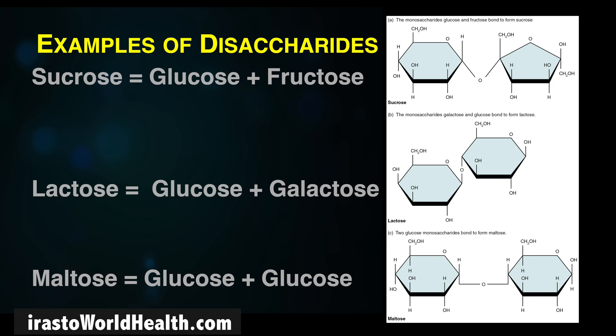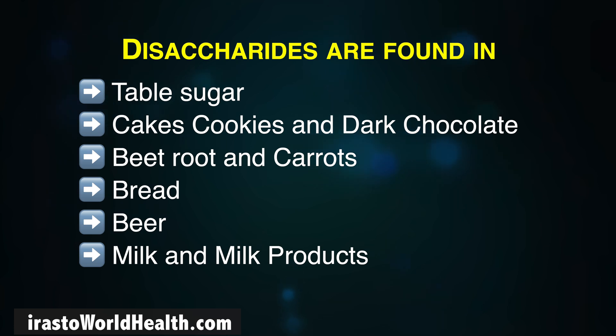Disaccharides — di means two — which means disaccharides are made up of two monosaccharide units held together with a bond. Examples are sucrose, maltose and lactose. Sucrose, which is found in table sugar, is made up of glucose and fructose. Lactose, which is found in milk, is made up of glucose and galactose. And maltose is made up of two glucose units.